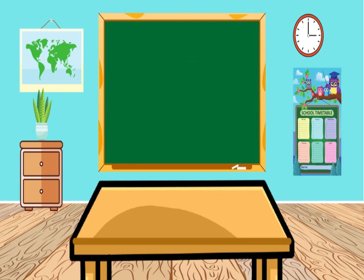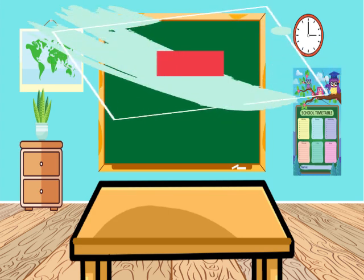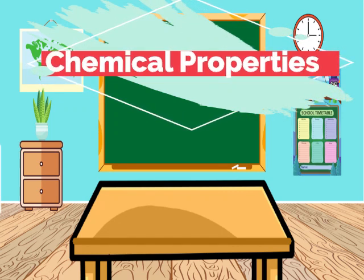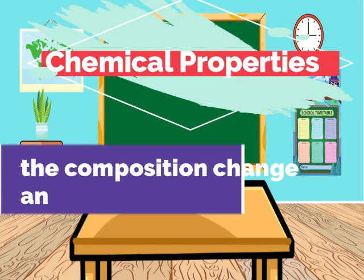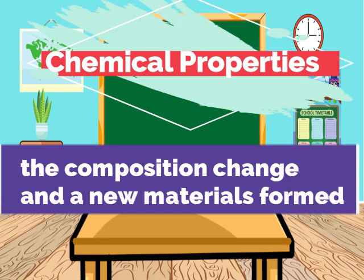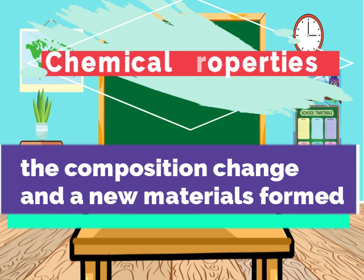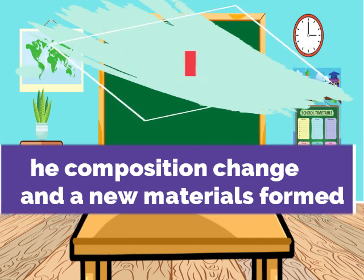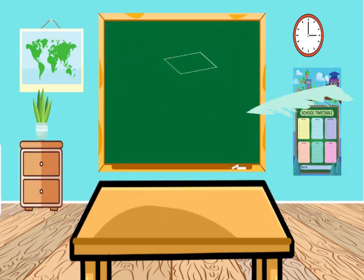These are also known as chemical properties. Chemical properties are characteristics of matter that can be observed when the composition of a material changes. The material changes its properties because of a chemical change or reaction, and a new material is formed.